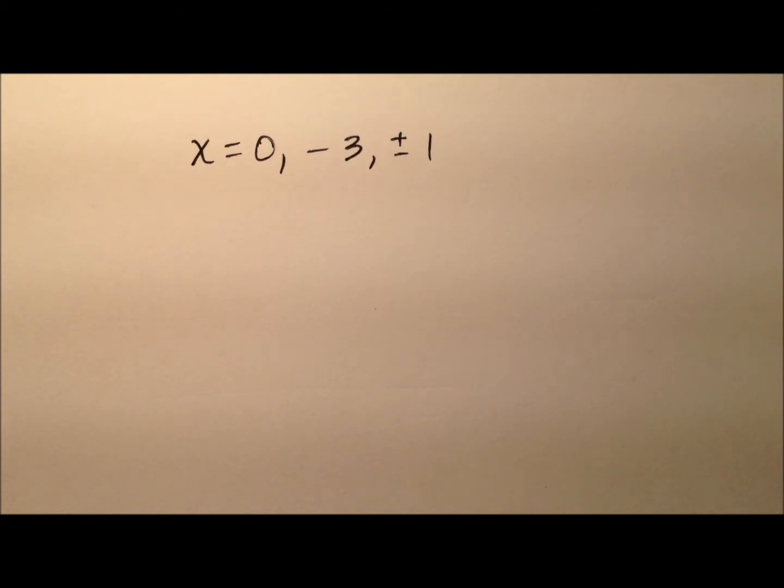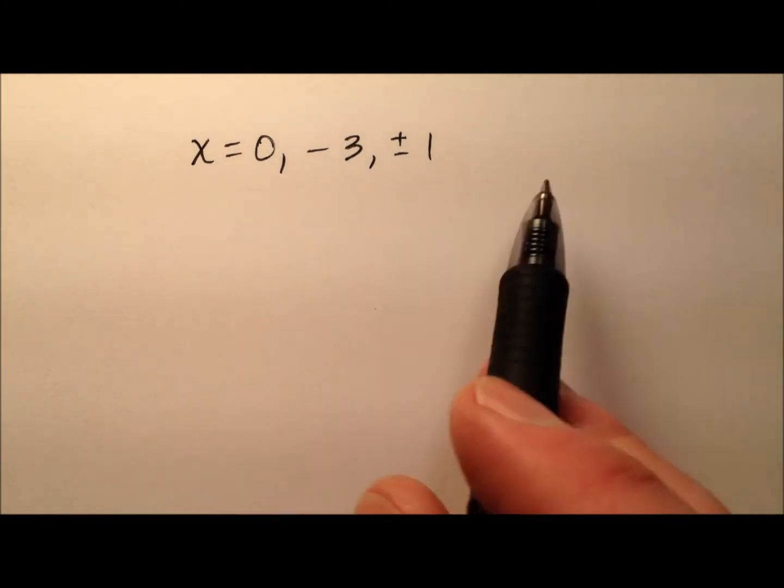So remember, when you're trying to write a polynomial from roots, each root needs to be written in the form x minus k, where k is the root.